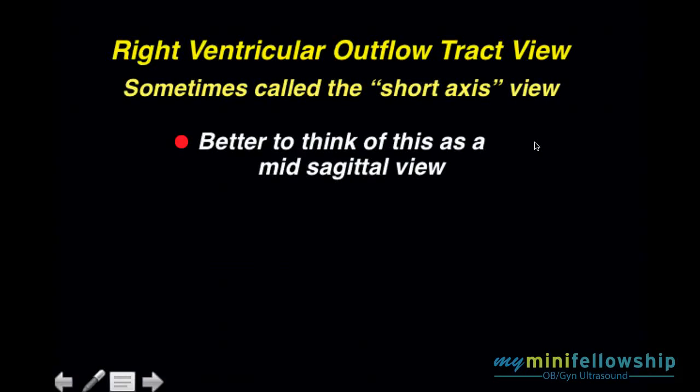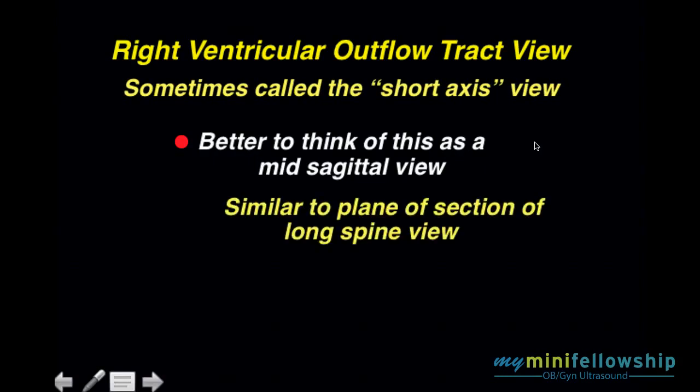It's better to think of the right ventricular outflow tract view as a mid-sagittal view of the thoracic spine. Now again, for the sonographers in the audience, this is a similar plane of section to the longitudinal view of the T-spine.